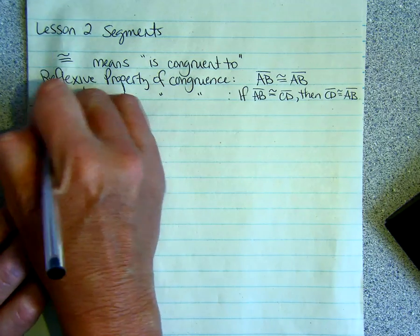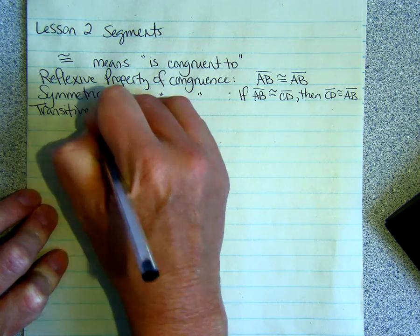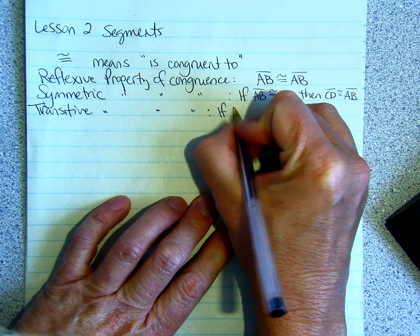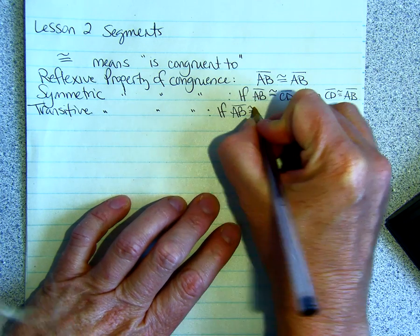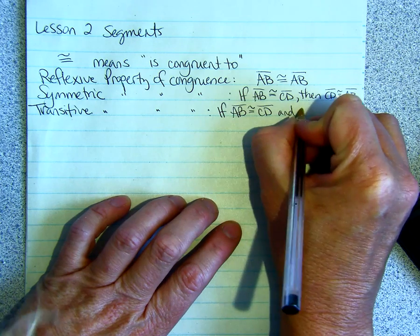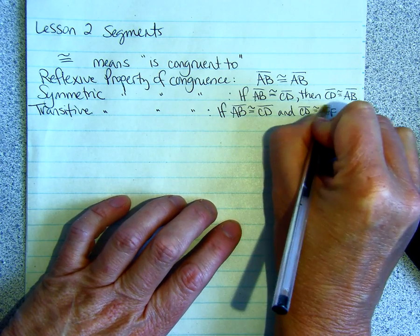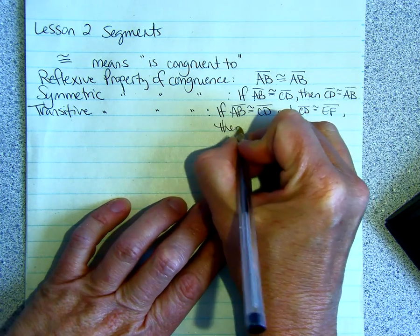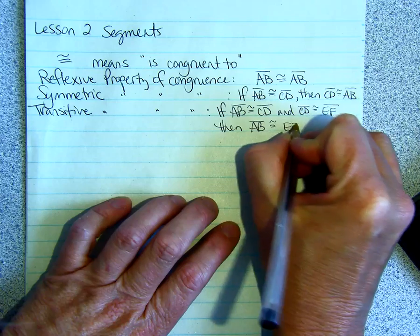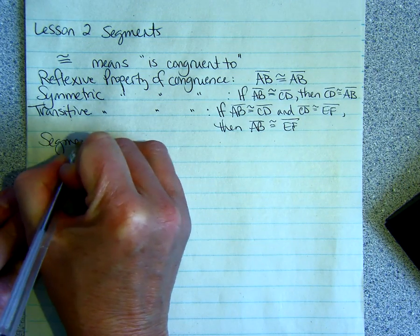The transitive property of congruence is if segment AB is congruent to segment CD and segment CD is congruent to segment EF, then segment AB is congruent to segment EF.